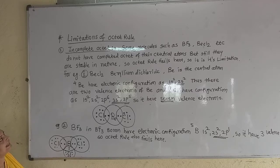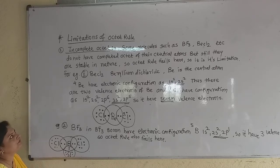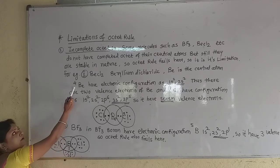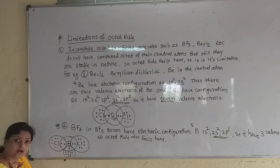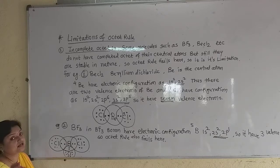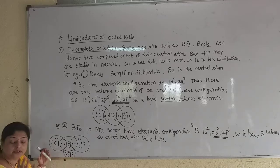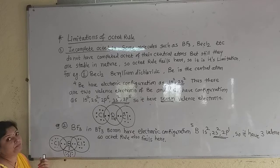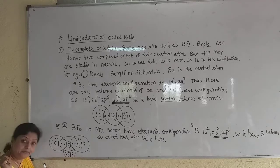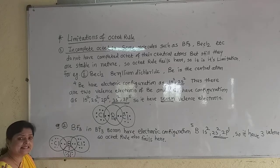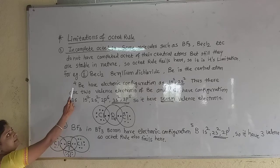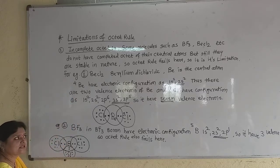Let us see the example first — beryllium dichloride. In beryllium dichloride, beryllium is the central atom, and beryllium has atomic number 4. You must remember up to 30 atomic numbers of elements by heart, along with their electronic configuration. You must understand that electronic configuration; then you can study the next topics. The atomic number and symbol of elements up to 30 you must know by heart.